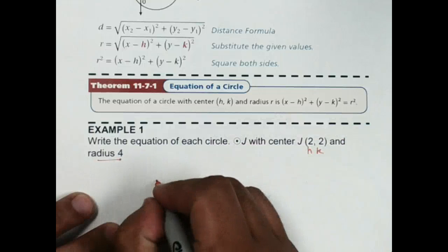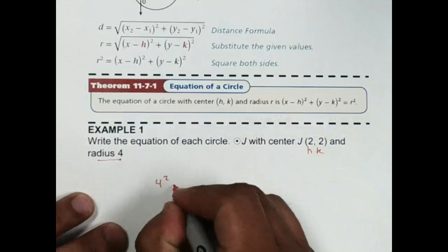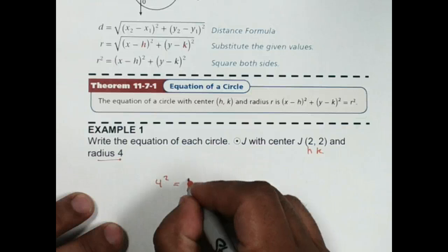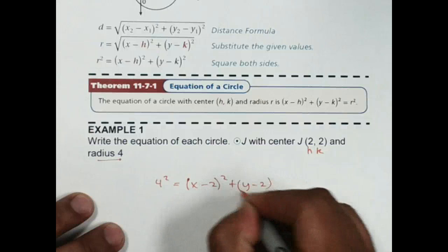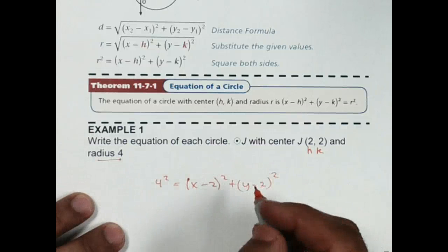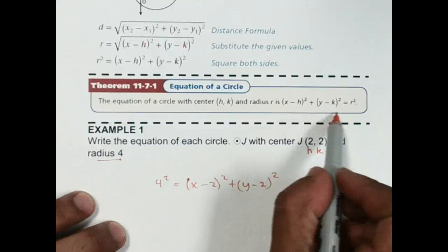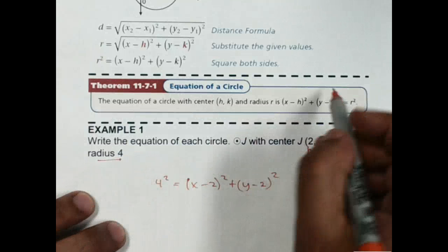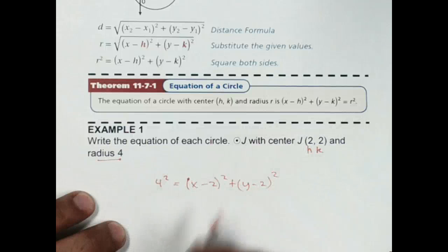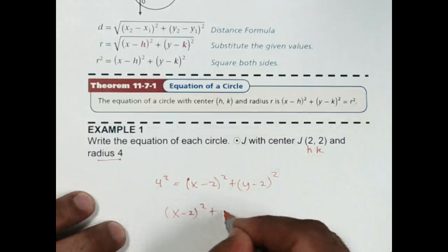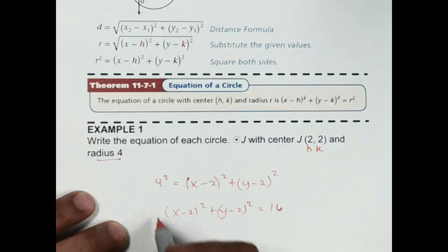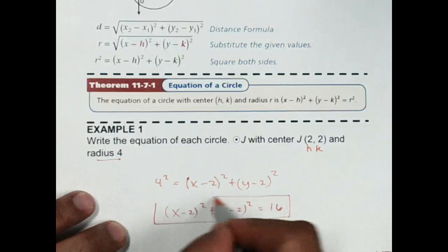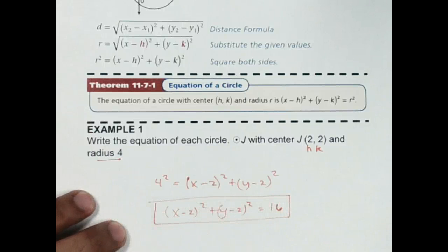So that tells us that 4² is equal to (x - 2)² + (y - 2)². It doesn't matter if I write it this way with r² or if I start with my radius, but just to go back to where it was written on the formula, we would say (x - 2)² + (y - 2)² = 16. And this is the accepted format for writing this equation, so that would be it. We would be done with Example 1.